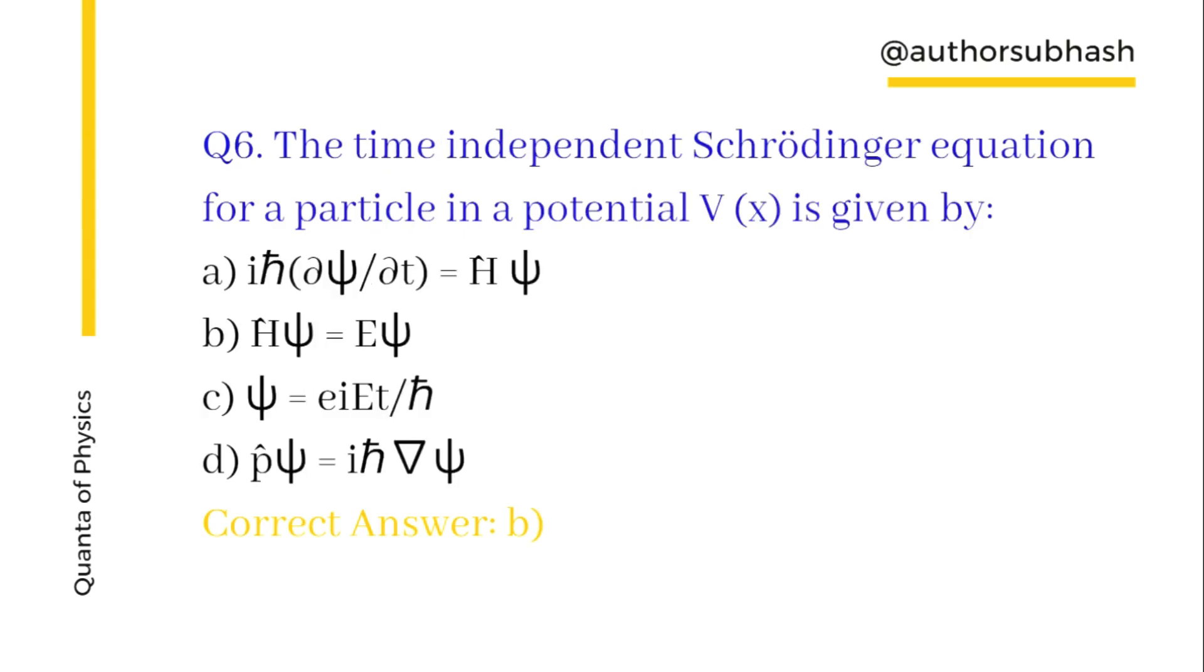The time-independent Schrödinger equation for a particle in a potential V(x) is given by Ĥψ = Eψ, and option A is for the time-dependent Schrödinger equation.